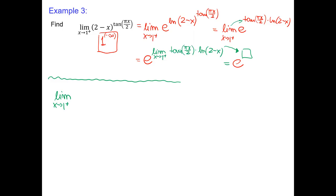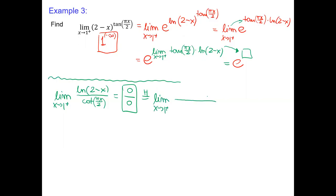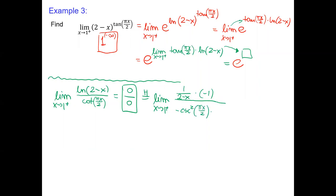Computing the limit: instead of multiplying by tangent, I divide by cotangent — giving ln(2 − x) over cot(πx/2). Checking at x = 1: ln(2−1) = ln(1) = 0, and cot(π/2) = 0. We apply L'Hôpital. Derivative of ln(2 − x) is 1/(2 − x) times (−1). Derivative of cot(πx/2) is −csc²(πx/2) times π/2. Substituting x = 1: numerator gives −1/(2−1) = −1. Denominator gives −csc²(π/2) times π/2.